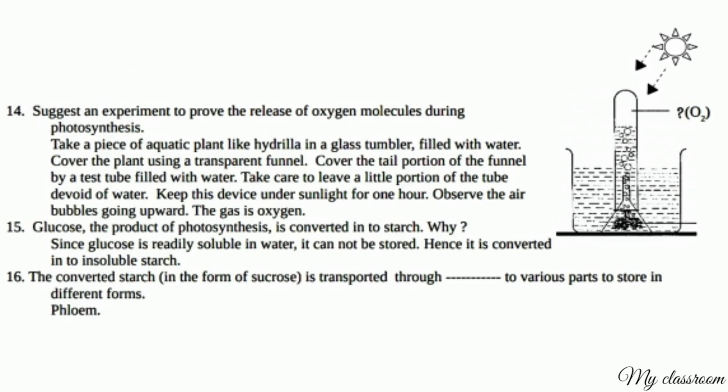Suggest an experiment to prove the release of oxygen during photosynthesis. Take a piece of aquatic plant like hydrilla in a glass tumbler filled with water. Cover the plant using a transparent funnel. Cover the tail portion of the funnel with a test tube filled with water, leaving a little portion of the tube devoid of water. Keep this device under sunlight for one hour and observe the air bubbles going upward. The gas is oxygen.